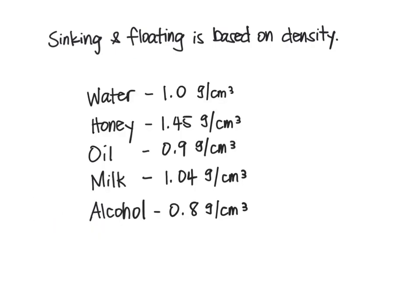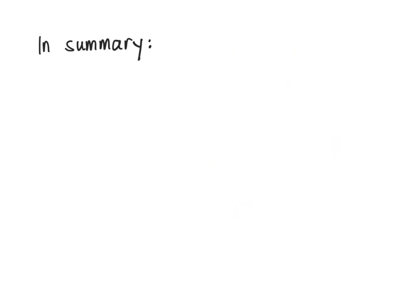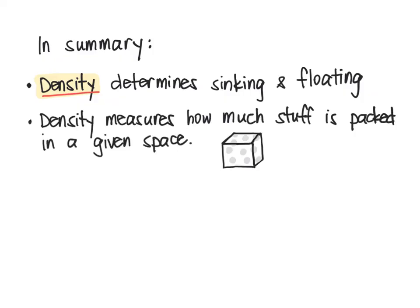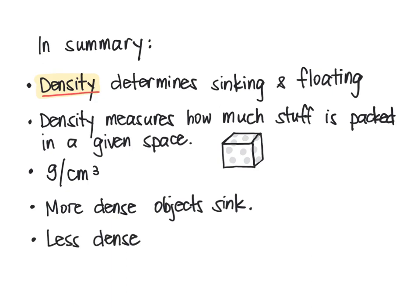Which of these fluids will float to the top and which will sink to the bottom? Pause this video and put them in order from floating to sinking. If you guessed this to be the answer, then you are correct. In summary, density determines whether something will sink or float. Density is a measure of how much stuff is packed into a given space. Its unit of measurement is commonly grams per centimeter cubed. More dense objects will sink and less dense objects will float.